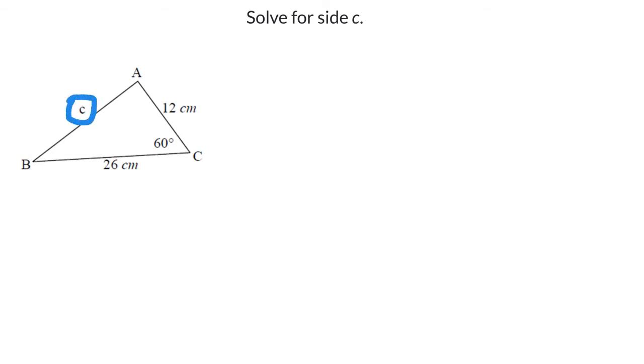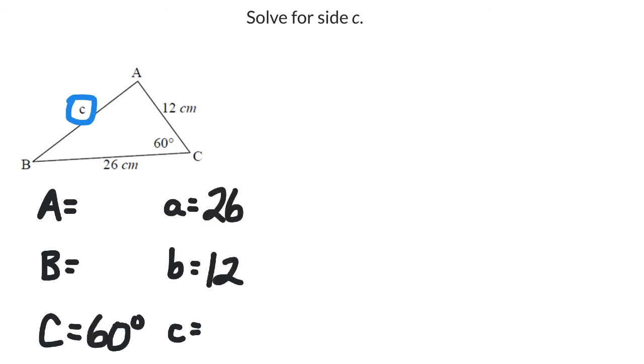I always start by setting up a chart, showing all of my angles and all of my sides. I plug in what I know. And I can see that I don't have a complete set of an angle with its side. So I can't use the sine law. That's how I know that I'm going to use the cosine law.